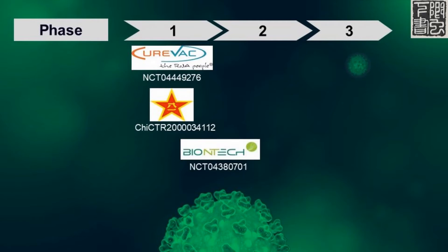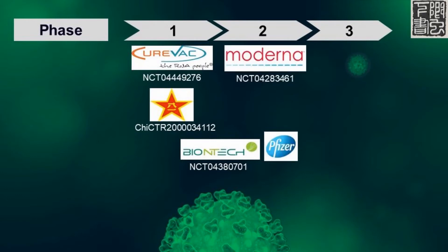BioNTech, another German company, is having a combined Phase 1 and 2 trial with Pfizer, one of the biggest pharma companies. Finally, Moderna, a U.S. company, is finishing up Phase 2 for its vaccine.